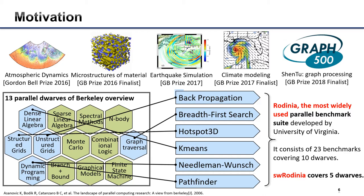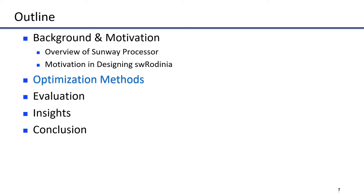The Rodinia benchmark suite is one of the most widely used parallel benchmarks. It consists of 23 benchmarks selected based on the well-known Berkeley parallel computation white paper. We select six benchmarks from five distinct dwarfs from Rodinia and port them to the Sunway processor with various optimization techniques to fully exploit the architecture features.